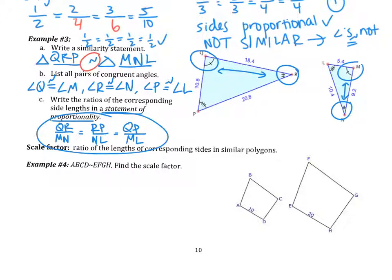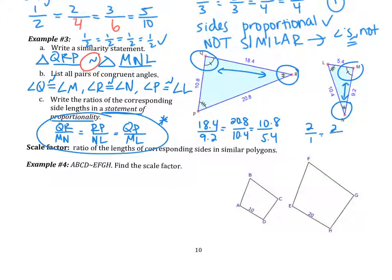Now we fill in the side lengths to show the figures are similar. QR is 18.4, corresponding to MN at 9.2; RP is 20.8, corresponding to NL at 10.4; and QP is 10.8, corresponding to ML at 5.4. Simplifying all ratios, we get 2 over 1 each time. This shows the sides are proportional. Combined with congruent angles, this proves the figures are similar.